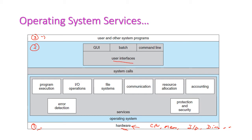The operating system provides three different types of services. The first is user interface. The OS will provide a command line interface (CLI), a batch interface, and a graphical user interface (GUI). Some operating systems provide only a command line, and some provide all three interfaces. The second service type is system calls.